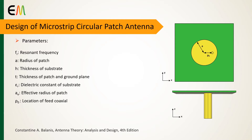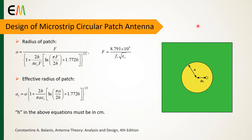In this slide I show the design parameters for the microstrip circular patch antenna, which include resonant frequency, radius of patch, thickness of substrate, thickness of patch on ground plane, dielectric constant of substrate, effective radius of patch, and location of the feed coaxial cable.